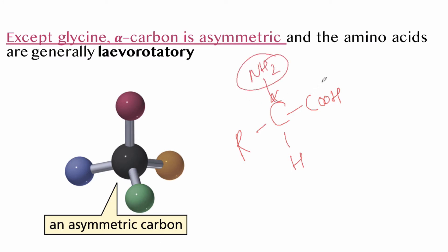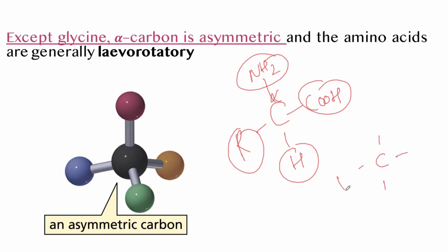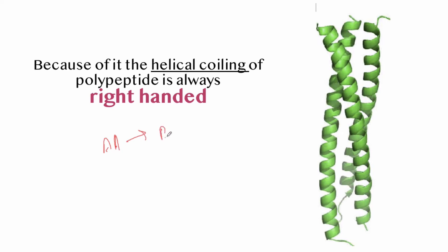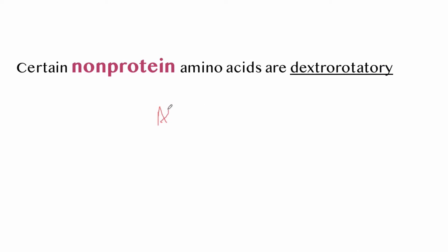Except for glycine, the alpha carbon is asymmetric — meaning it has four different groups attached to it. Amino acids are generally levorotatory. In glycine, the carbon is not asymmetric because it has two hydrogen atoms attached to the alpha carbon. Amino acids make polypeptides with a helical structure, and this helical coiling of the polypeptide is always right-handed. Certain non-protein amino acids are dextrorotatory.